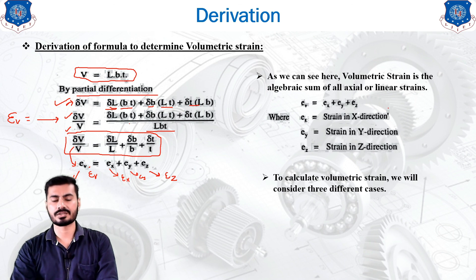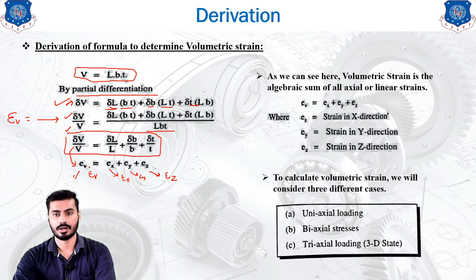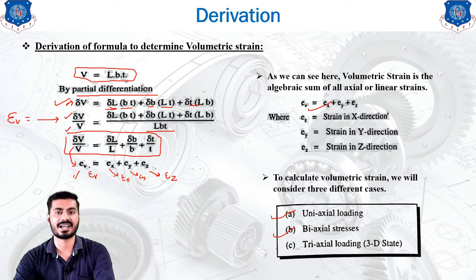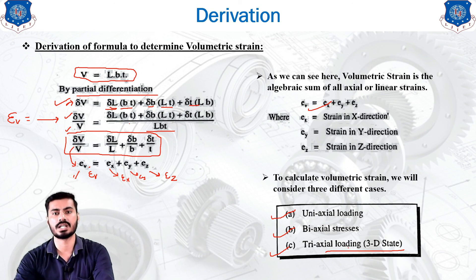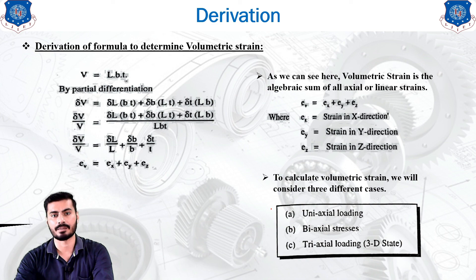To calculate volumetric strain, we consider three different loading cases. The first is uniaxial loading, where load is applied along only one direction. The second is biaxial loading, where load is applied in two different perpendicular directions (e.g., x and y). The third is triaxial loading, a 3D state where loads are applied in three mutually perpendicular directions x, y, and z. Volumetric strain equations are derived for each case.